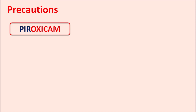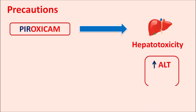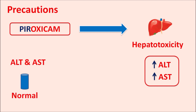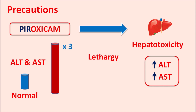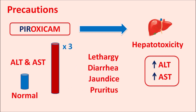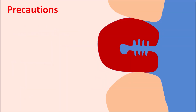Piroxicam can also increase hepatotoxicity. Liver enzymes such as ALT (alanine transaminase) and AST (aspartate transaminase) can be elevated with chronic use of piroxicam. If ALT and AST levels rise to three times the upper normal limit, symptoms such as lethargy, weakness, diarrhea, jaundice, and pruritus may be observed, indicating hepatotoxicity. In such situations, liver function tests should be done, and if enzyme levels are elevated to three times the upper normal limit, this drug should be stopped and replaced with another suitable agent.